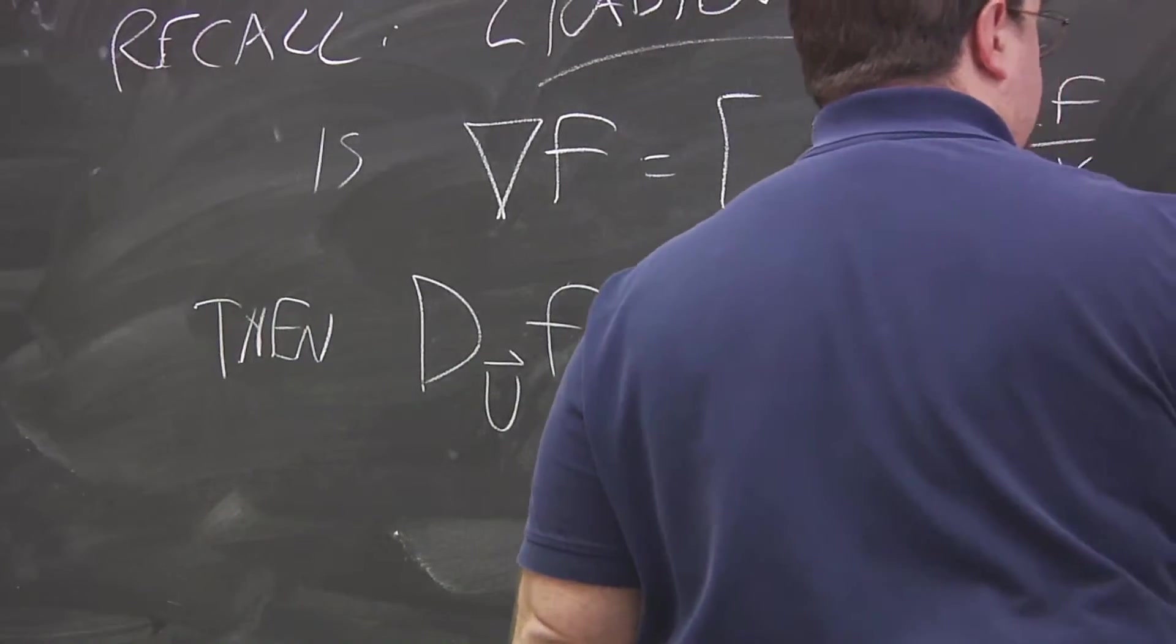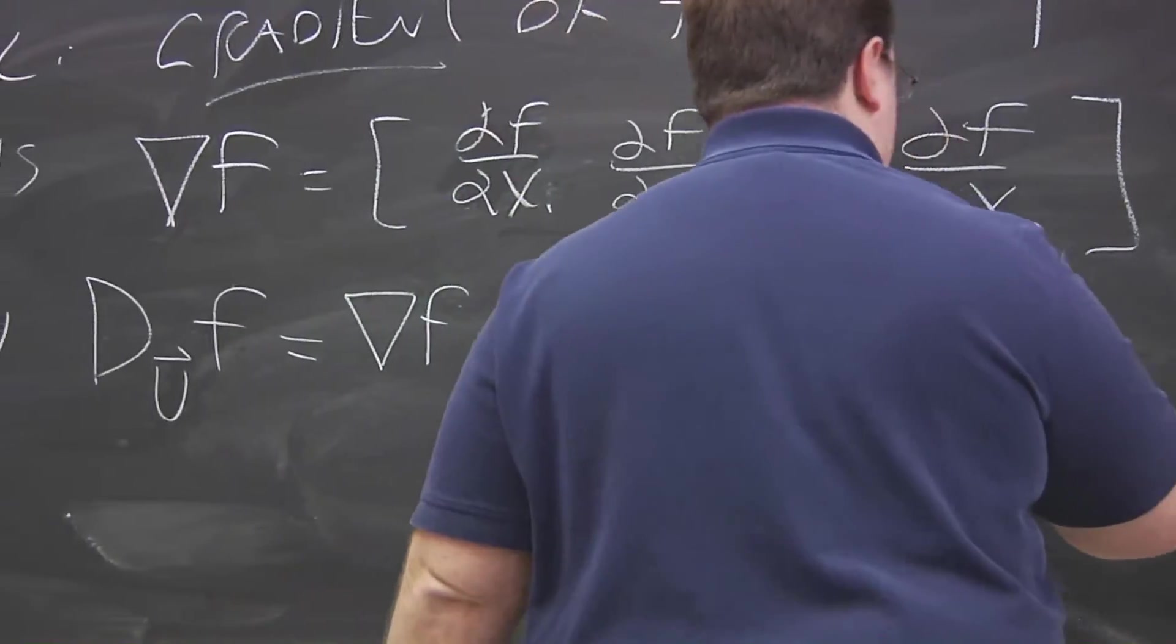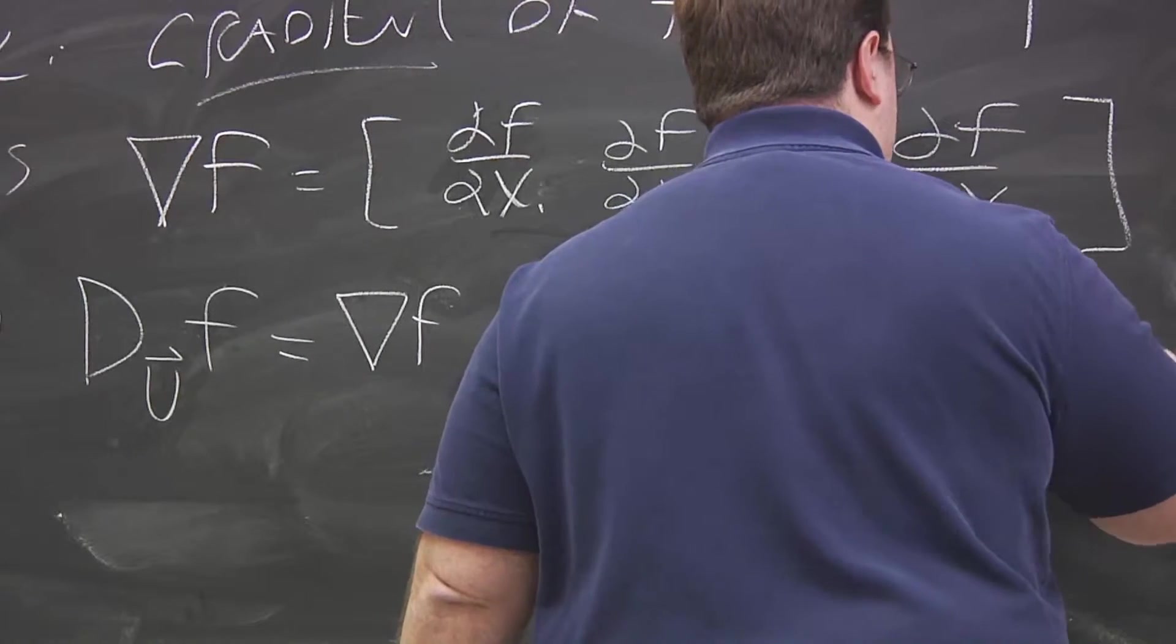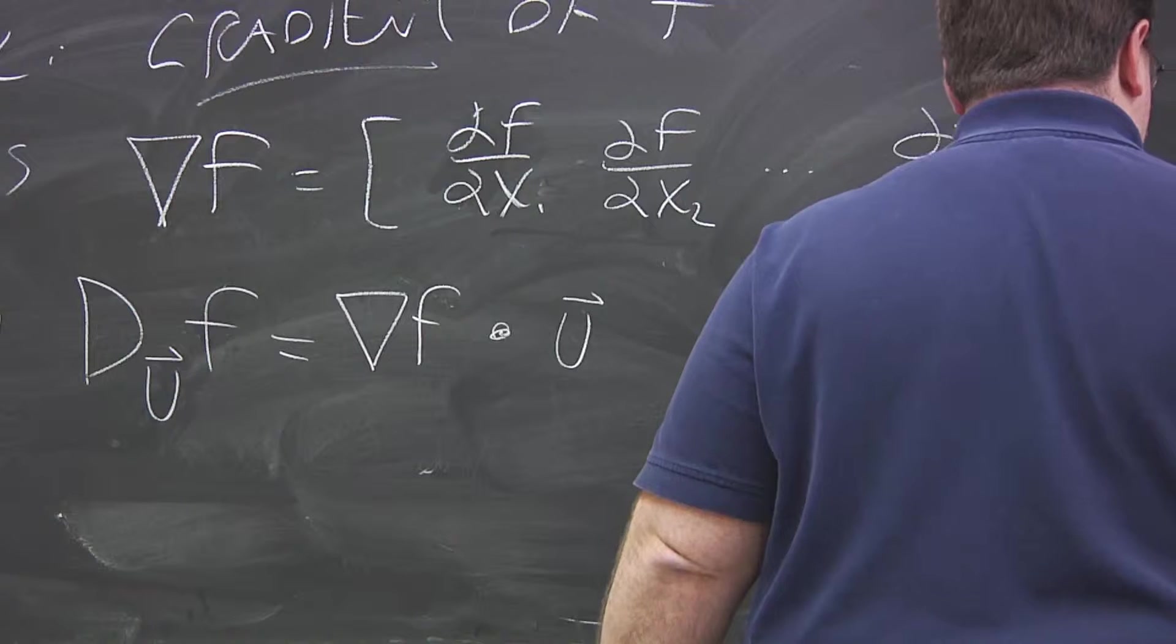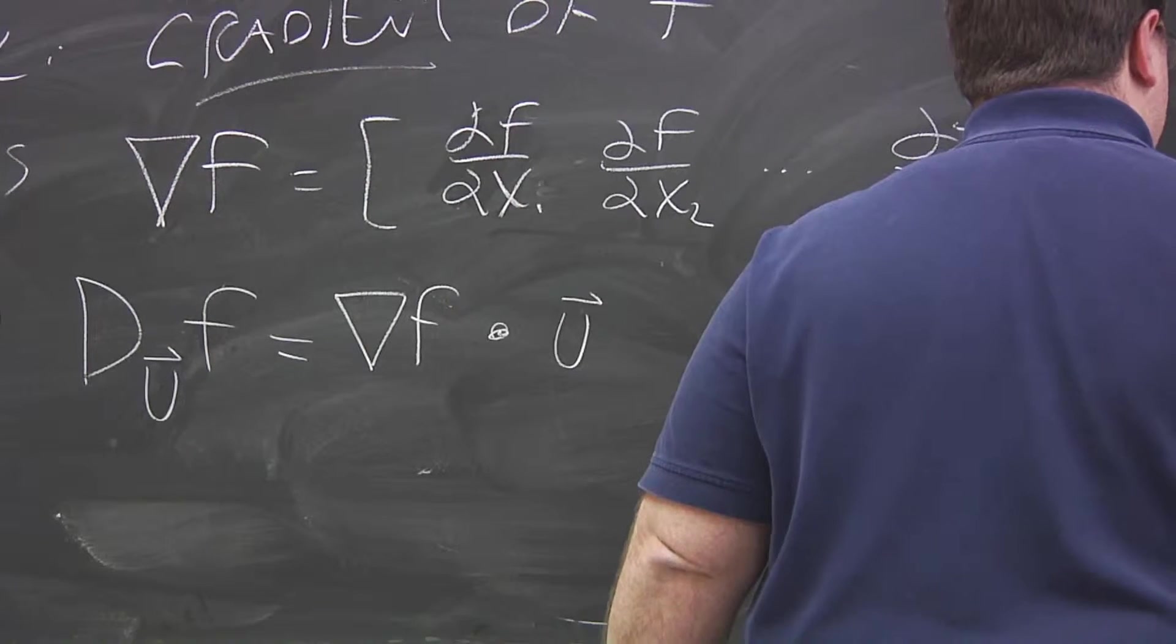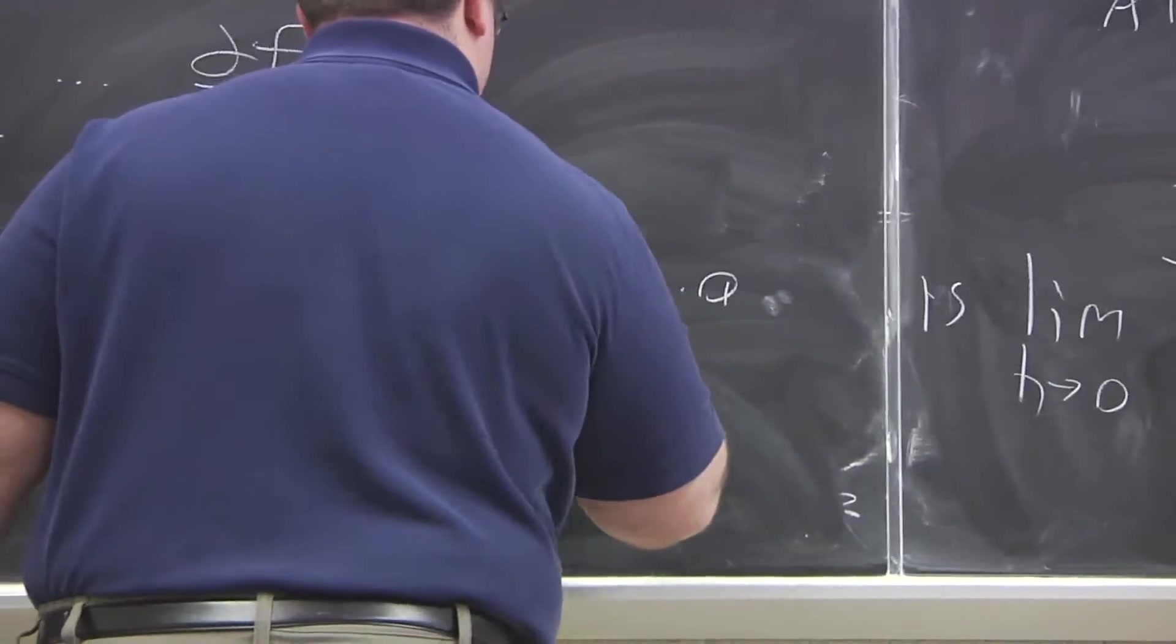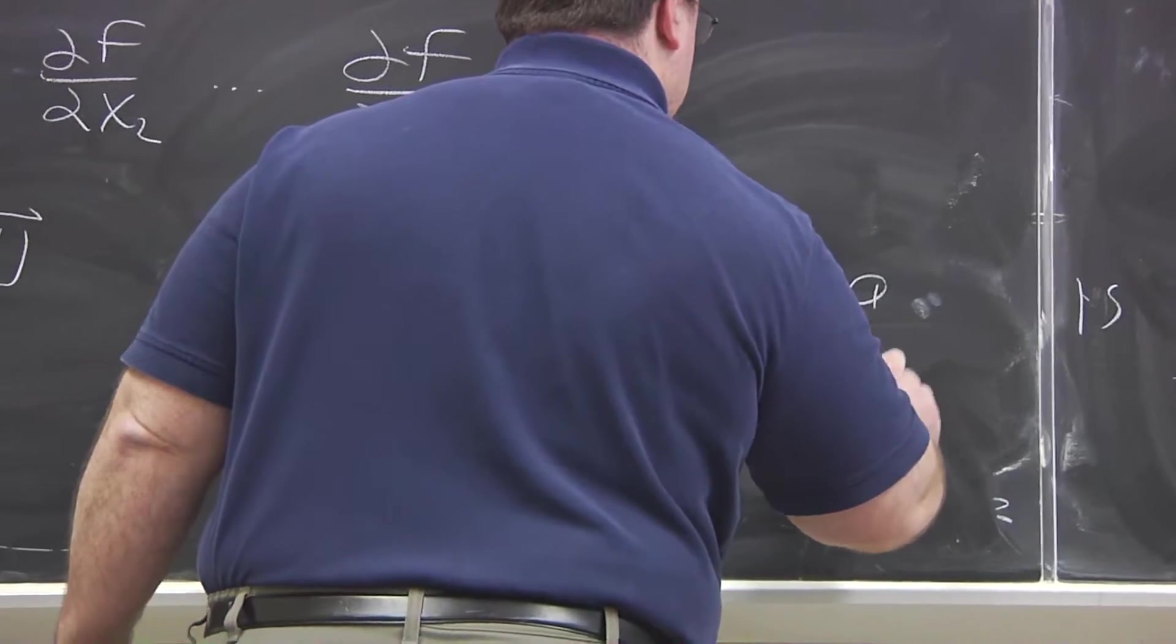So, in the case of two variables, we have... Oh, look, I did it right that time. And x-naught, y-naught, it's going to be a partial of f with respect to x, x-naught, y-naught, times a, plus a partial with respect to y, times b.